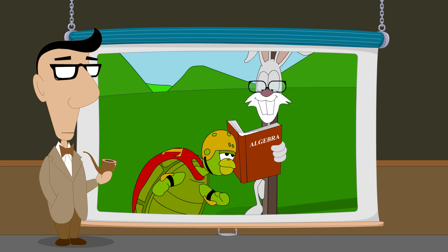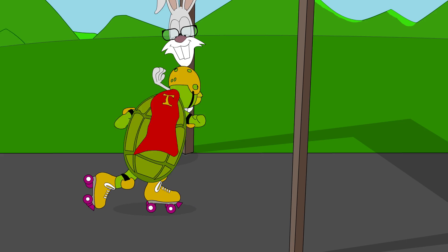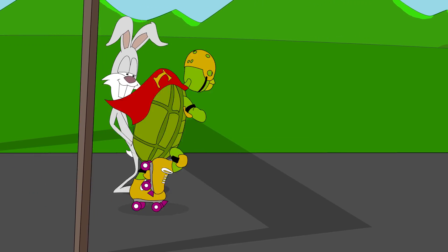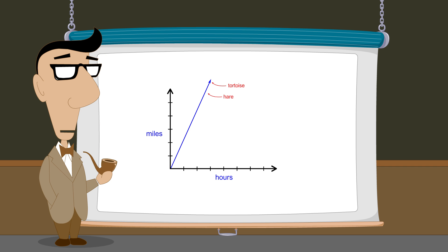This system of linear equations therefore has no solution. Yet another possibility is that both the tortoise and hare start the race at the same time and travel at the same speed. Their graphs therefore coincide, reflecting the fact that the tortoise and hare both have identical distance values at every point in time during the race. Since the two graphs intersect at every point, there are an infinite number of solutions to this system of equations.